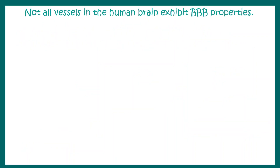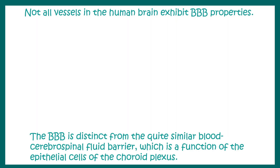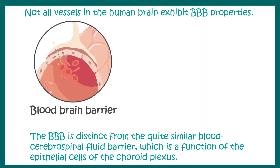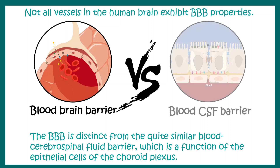Not all vessels in the human brain exhibit blood-brain barrier-like properties. In fact, in the choroid plexus and circumventricular organs there are blood vessels which are somewhat leaky. This introduces two terminologies: the blood-brain barrier and the blood-CSF barrier. The idea behind both barriers is to prevent the entry of harmful substances into the brain, but differences exist between the two.